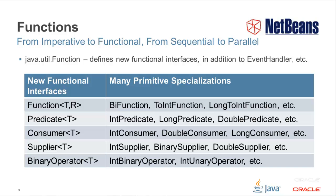These new functional interfaces are found in the new java.util.function package. When you are migrating your code to Java 8, it helps to spend some time studying each of these interfaces and researching how they can apply to your existing code. Function takes an input and returns an output. Predicate takes an input and returns a boolean. Consumer takes an input and doesn't return anything. Supplier has no input and returns an output. BinaryOperator takes two inputs and returns one output. Primitive specializations exist for performance reasons to avoid boxing and unboxing.